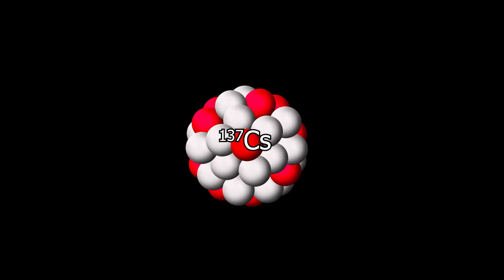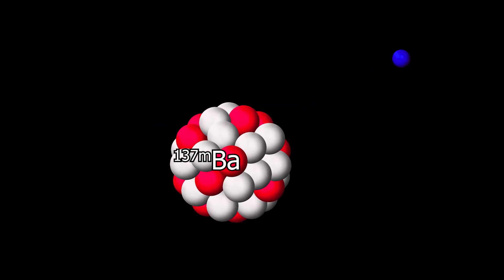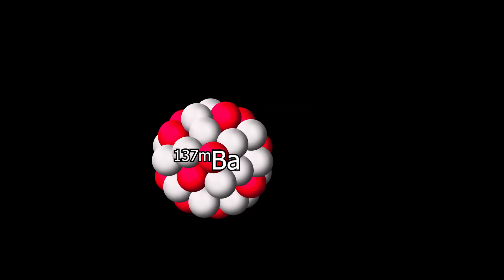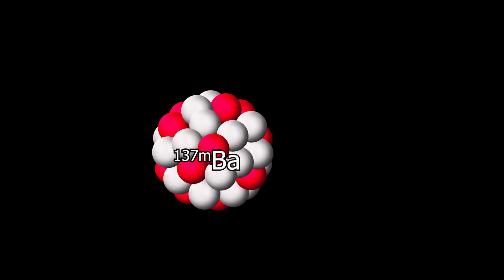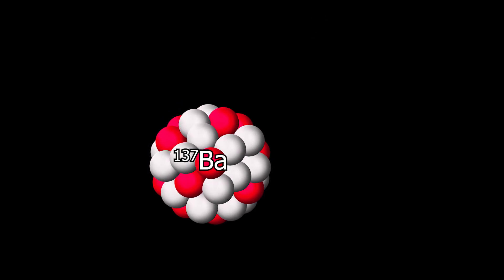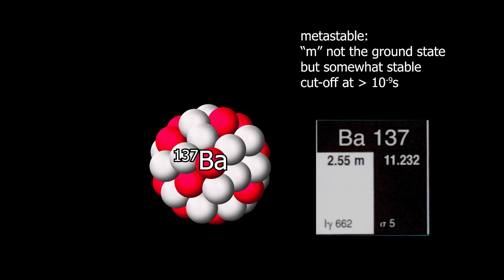It decays predominantly into Barium-137M. The M indicates that this is a version of the Barium-137 nucleus that is not in the ground state, but it's still relatively stable. The designation M is given to excited states that have half-lives greater than nanoseconds. Barium-137M has a half-life of 2.5 minutes, and that's the half-life we aim to determine today.